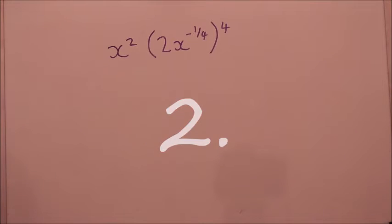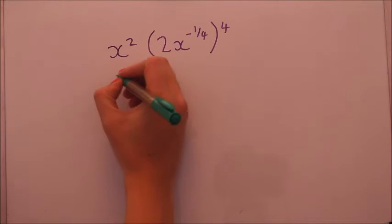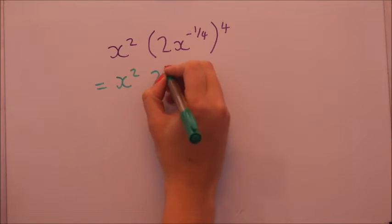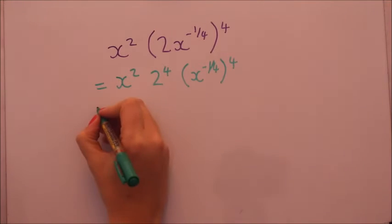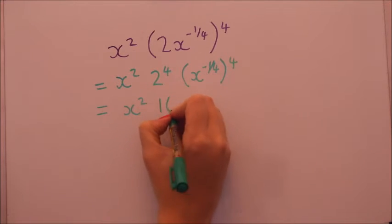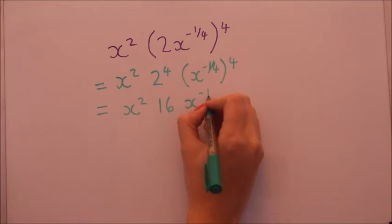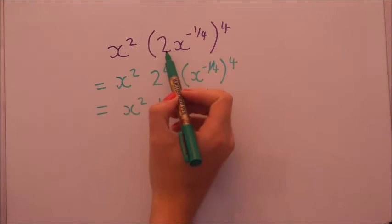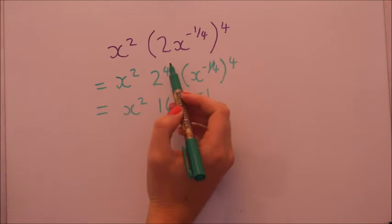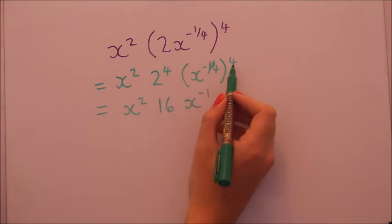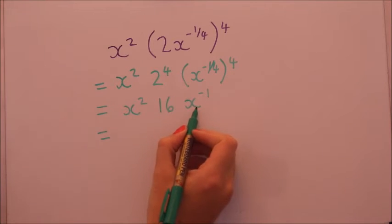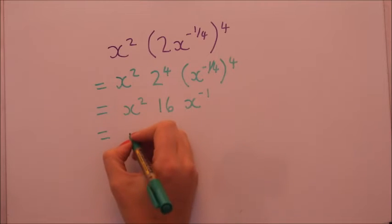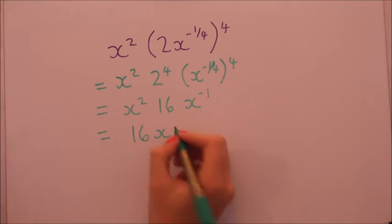Okay do have a go at this one yourself. Okay so in this example I split them up again. Don't forget that two to the power of four. That's a place where some people drop some marks. So when I times these powers together I got minus one. Now I've got x squared times x to the minus one. So I'm going to add these powers. So two plus minus one is just one. So that's sixteen times just x to the power of one. So that's just x.